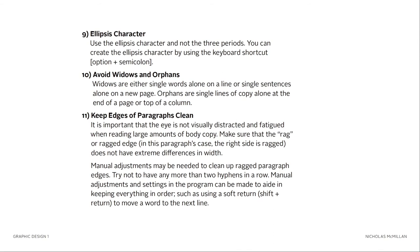Ten: avoid widows and orphans. Widows are either single words alone on a line or single sentences alone on a new page. Orphans are single lines of copy alone at the end of a page or top of a column. Eleven: keep edges of paragraphs clean. The eye should not be visually distracted when reading large amounts of body copy. Make sure the rag doesn't have extreme differences in width. Try not to have more than two hyphens in a row. Manual adjustments and using a soft return — Shift plus Return — can move words to the next line.